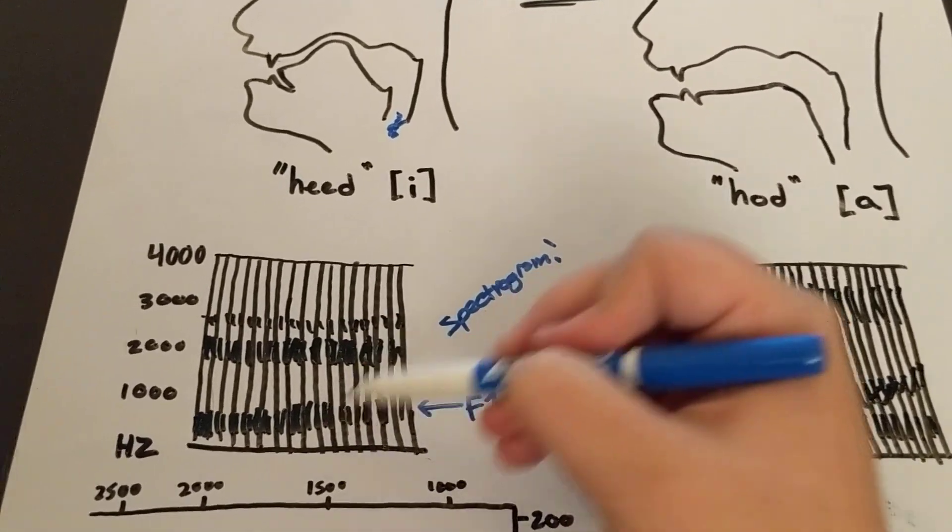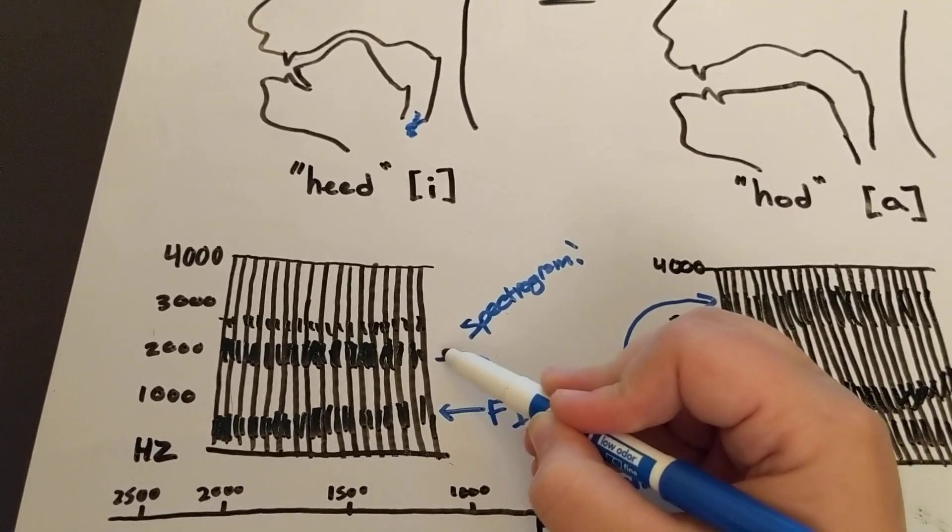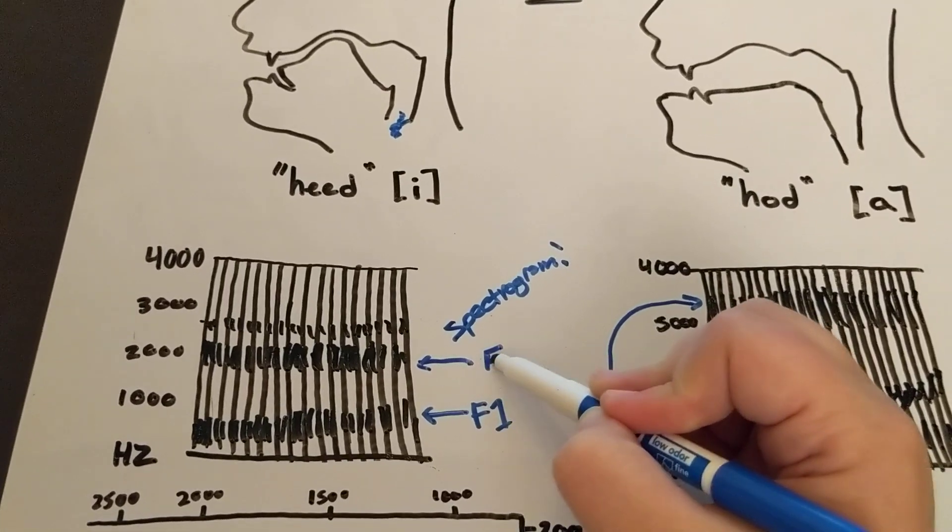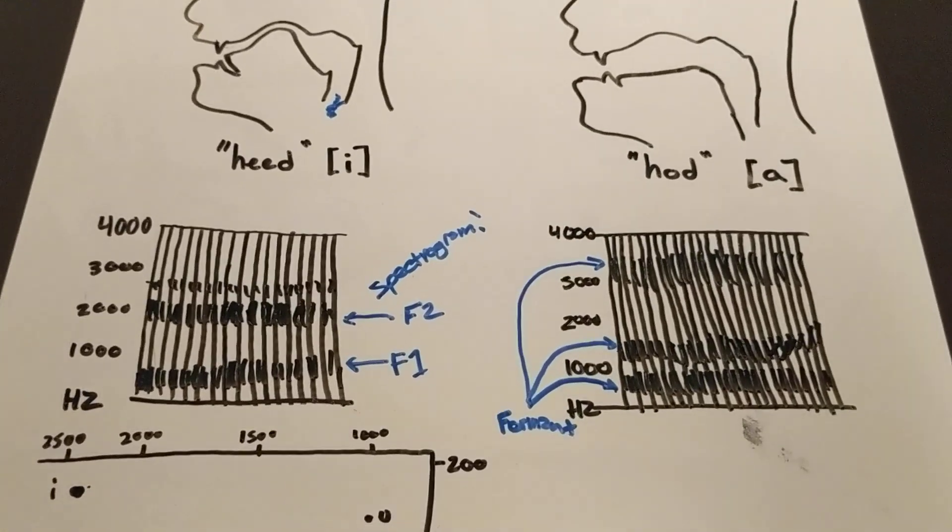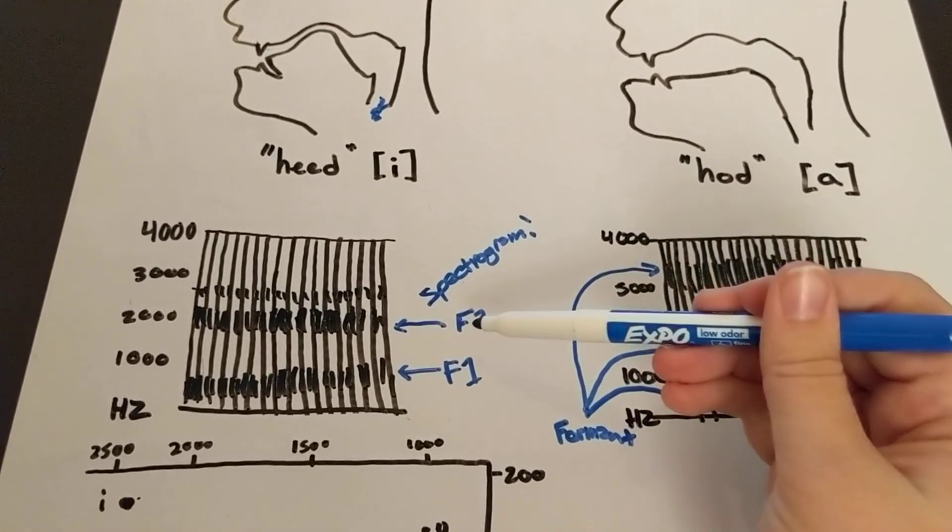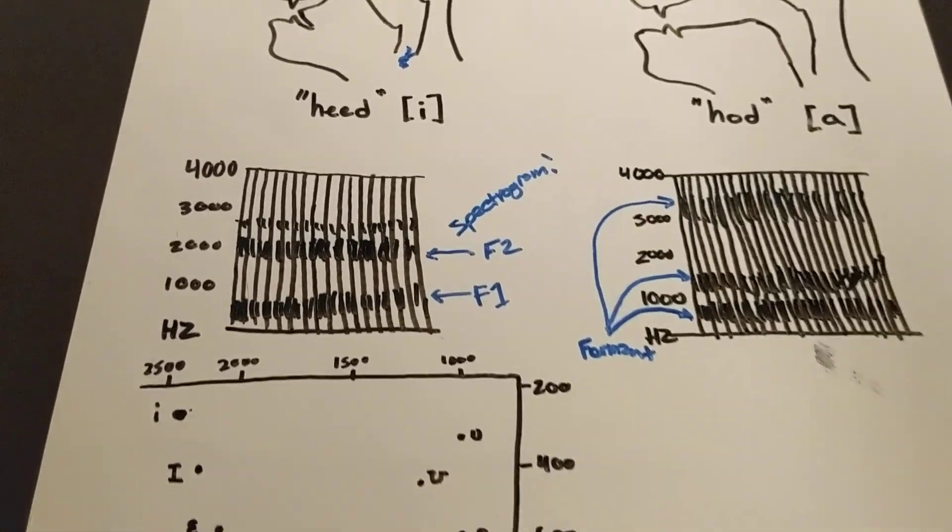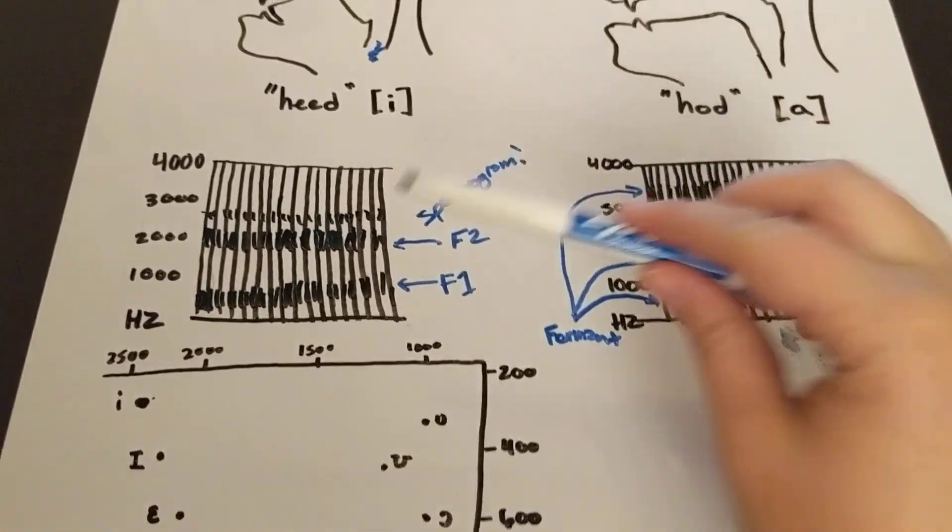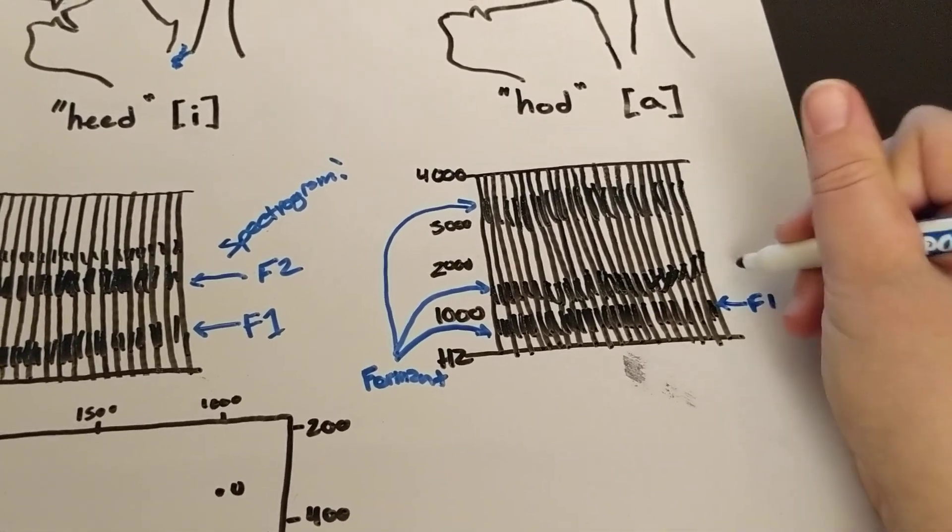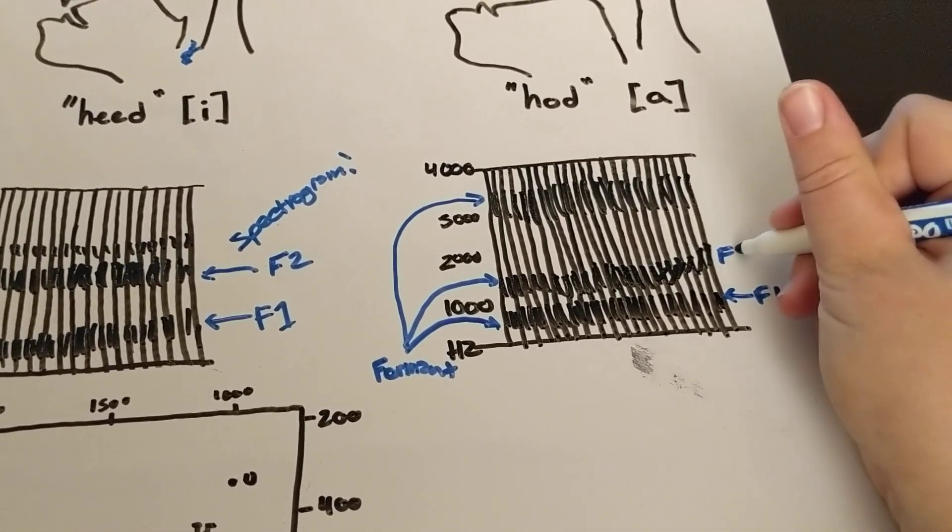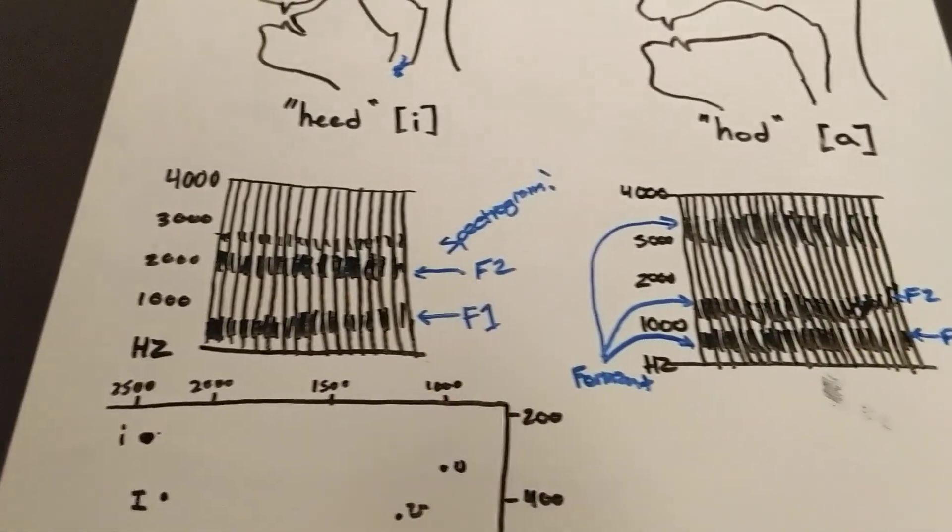And so this is formant 1. And this is formant 2, F2. And usually when we're just going to map the vowels of a language, we just look at formant 1 and formant 2. This formant 3 is less important, but is sometimes used for other things. So usually we're looking at F1 and F2. And F1 and F2 here. Here. And this is all we really need to describe the vowel qualities.